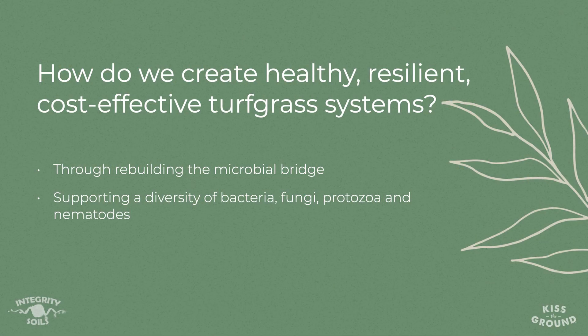The question we're left with is: how do we create healthy, resilient, cost-effective grassland systems that don't require these inputs and don't require the micromanagement by human beings? How do we step back and really start to create ecosystems that function? We do this through rebuilding the microbial bridge — supporting a diversity of bacteria, fungi, protozoa, and nematodes. This fully intact soil gut microbiome is what it takes to receive these kinds of outcomes.